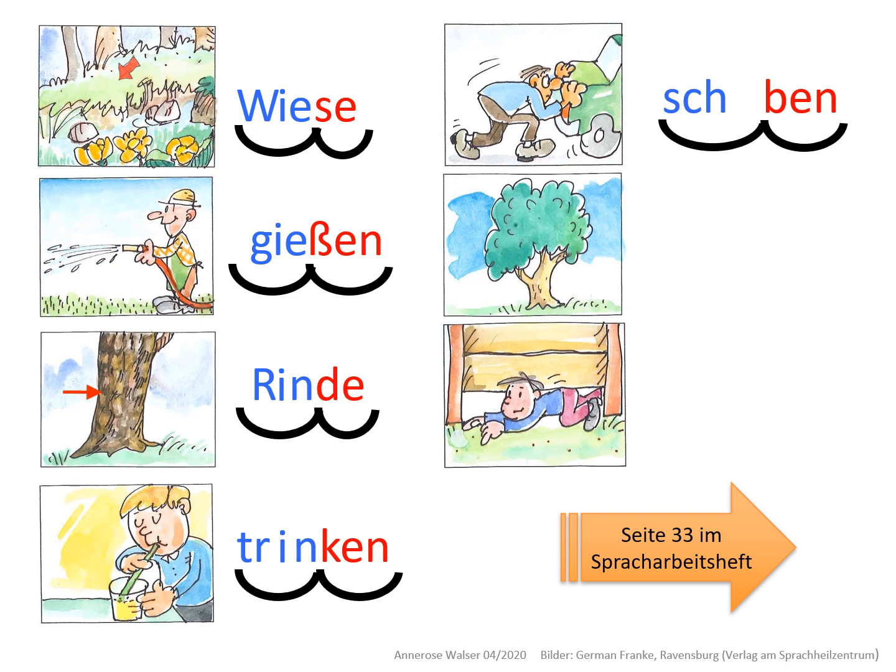In der ersten Silbe steht das Sch, eine Lücke für das I, und dann kommt schon die zweite Silbe. Das heißt, nach dem IE folgt kein weiterer Buchstabe in der ersten Silbe. Deshalb stimmt das IE an dieser Stelle.